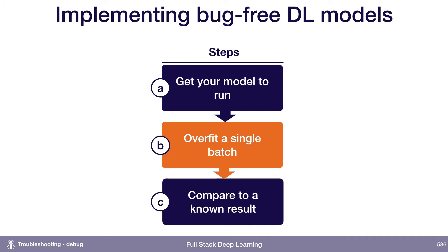Once your model is running, you're not done yet. The next thing to do to give yourself more confidence that your model is running correctly is to overfit a single batch of data. In my experience, this heuristic catches an absurd number of bugs. It's really easy to skip because it seems obvious that your implementation is good enough — but in reality, that's often not the case. It's much better to catch bugs early rather than after you've implemented a bunch of additional stuff.